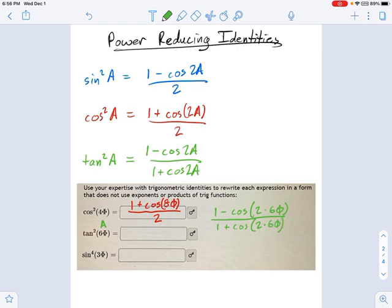Okay, so if we're writing an answer in here, we're going to simplify that a little bit. Not that much. We're just going to say 1 minus cosine of 12 phi over 1 plus cosine of 12 phi, right? Okay, so I think those are pretty straightforward examples.